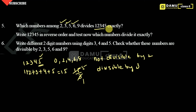Next we check divisibility by 5. For the rule of 5, the units place digit should be either 0 or 5. Here the units digit is 5, so yes, 12345 is divisible by 5.